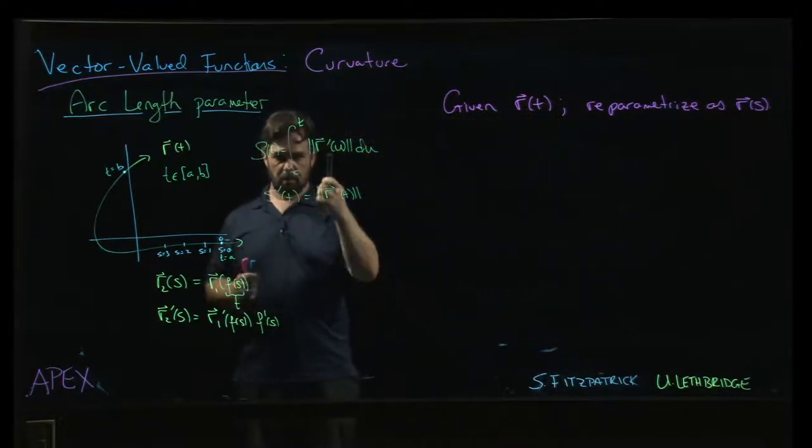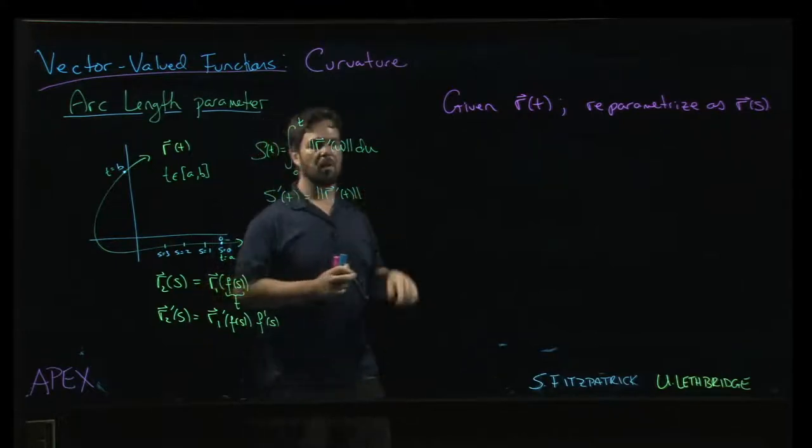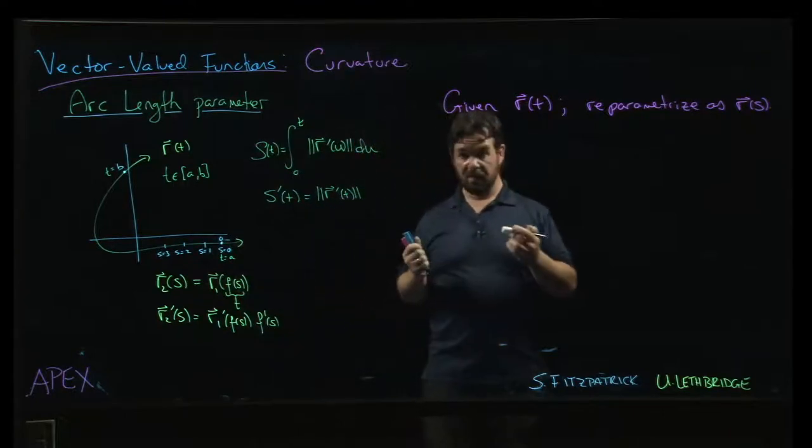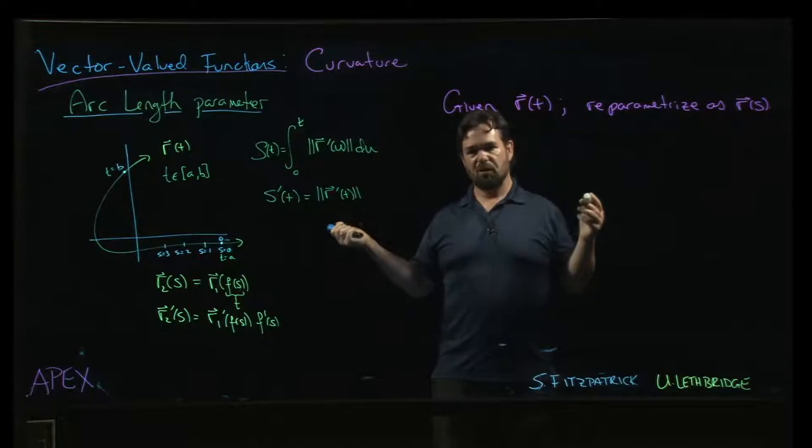One thing just to note, because I made a mistake in the earlier video but I don't really want to go back and reshoot it. The lower limit of integration here when we define the arc length parameter should be zero, rather than say A, just for simplicity.